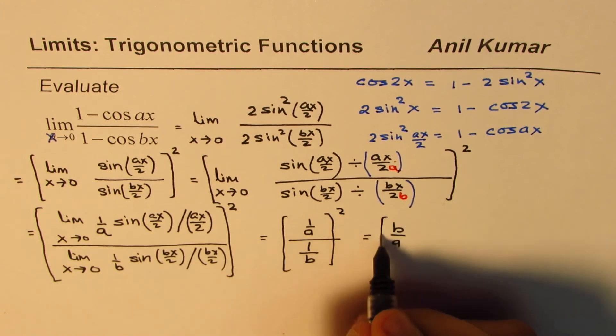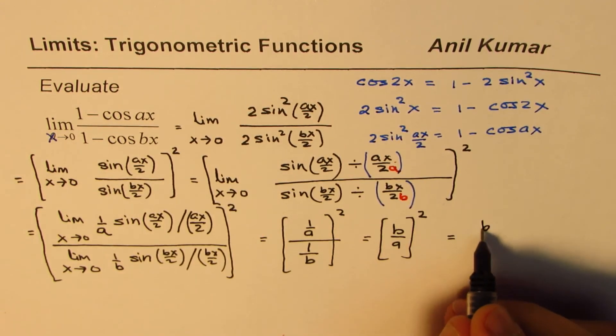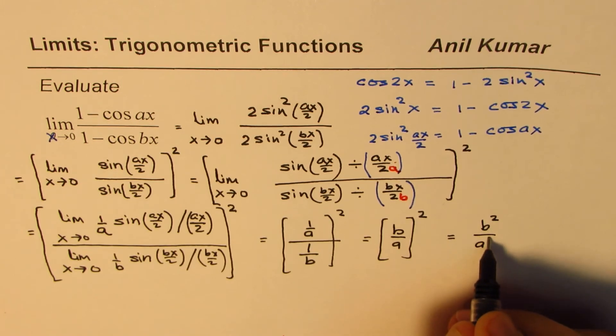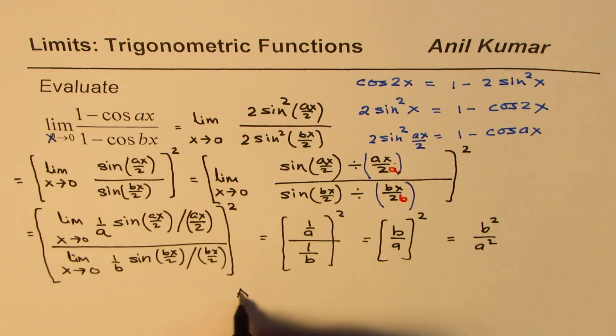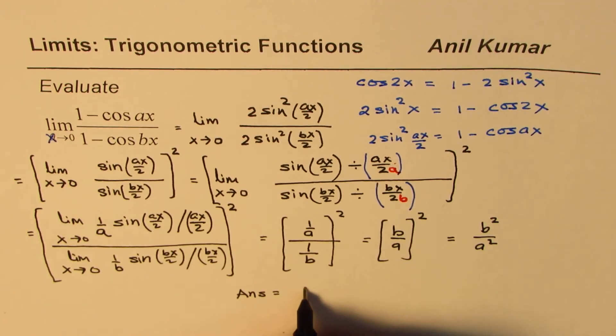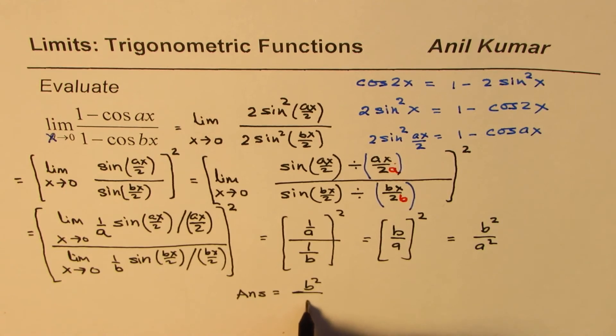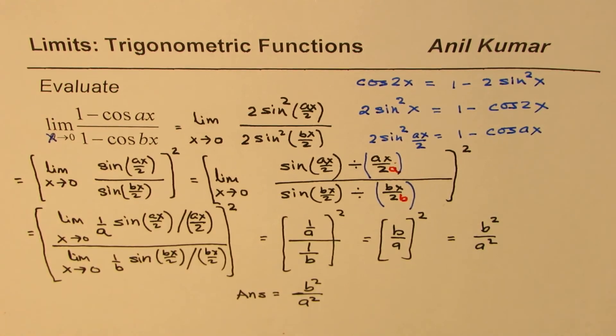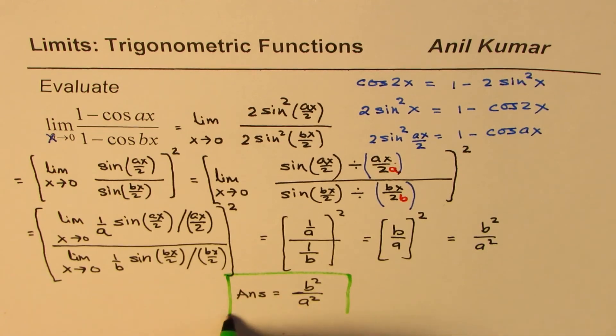...whole square, and so this is (b/a)², or the answer will be b²/a². So that is how you can get your answer. So the limit for this function equals b²/a².